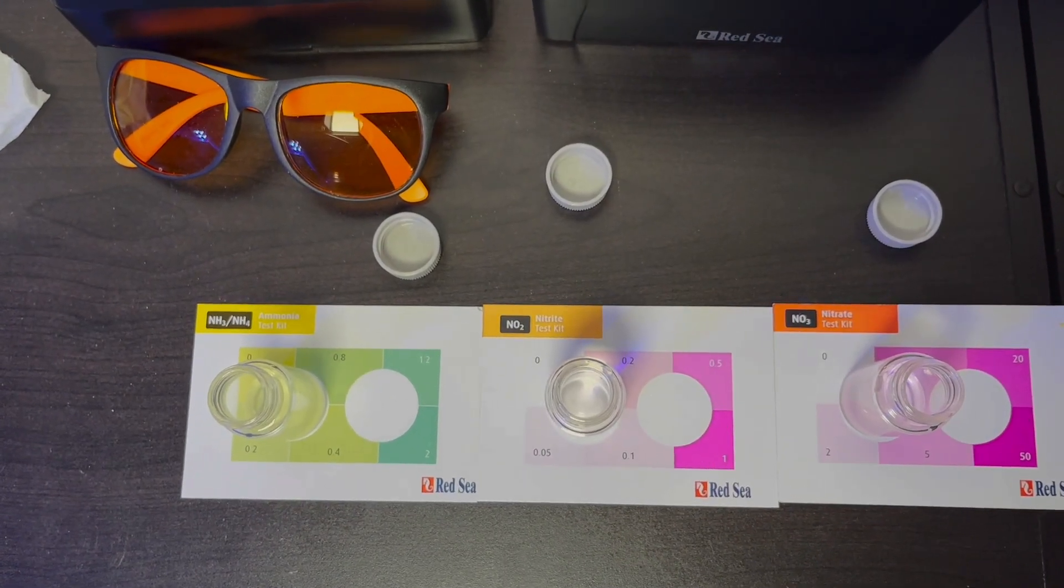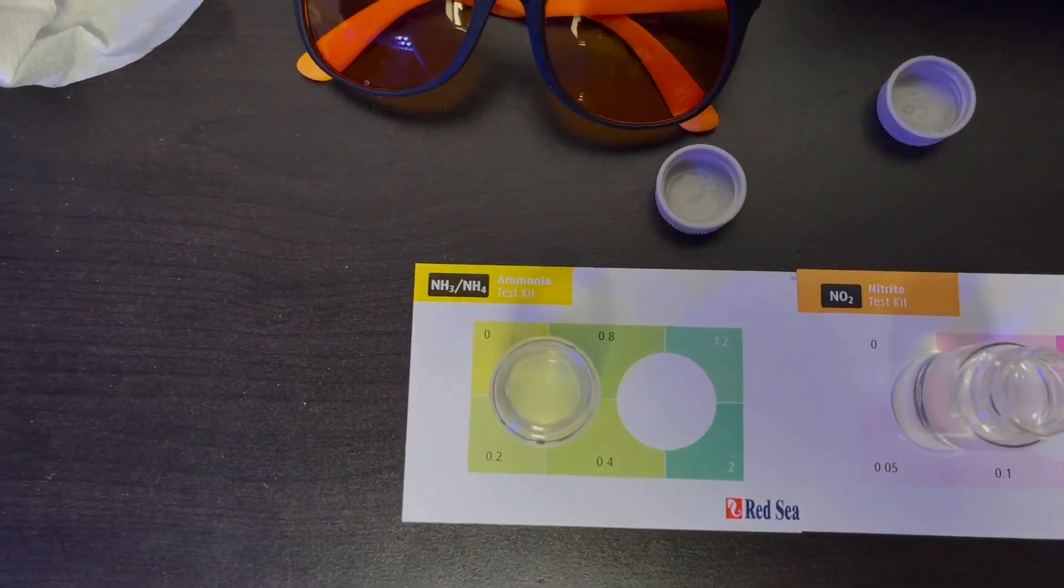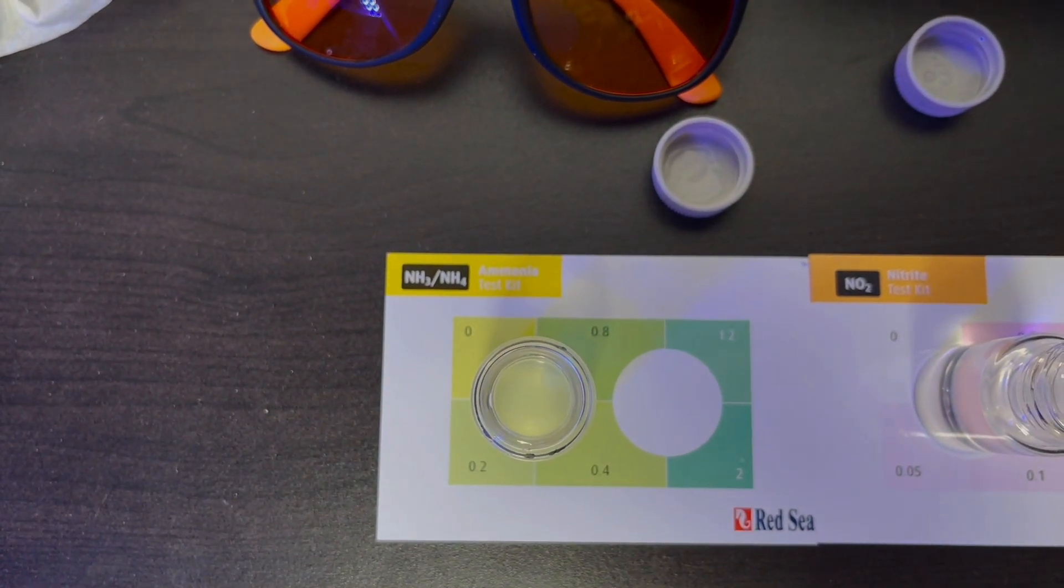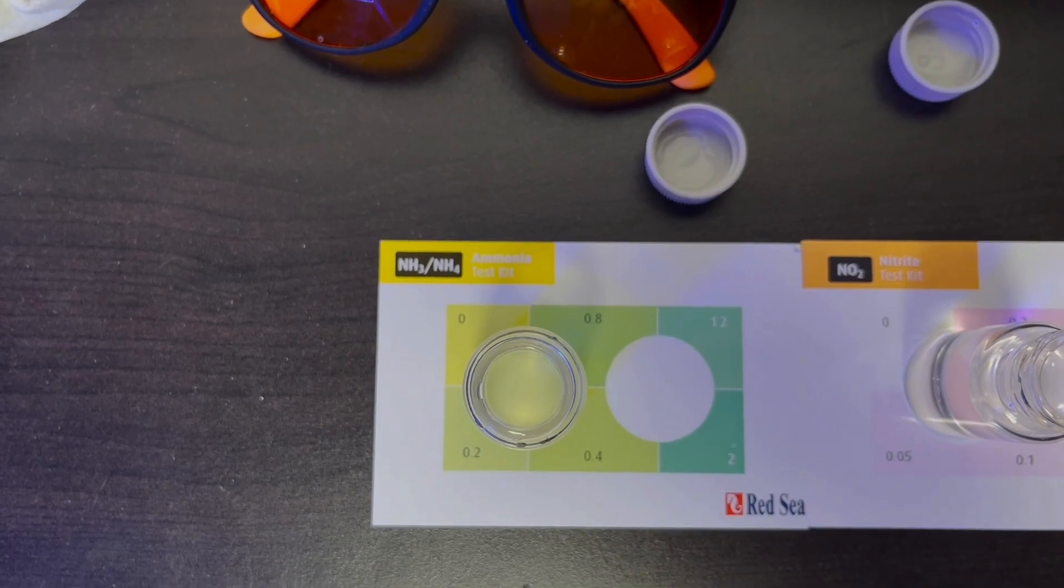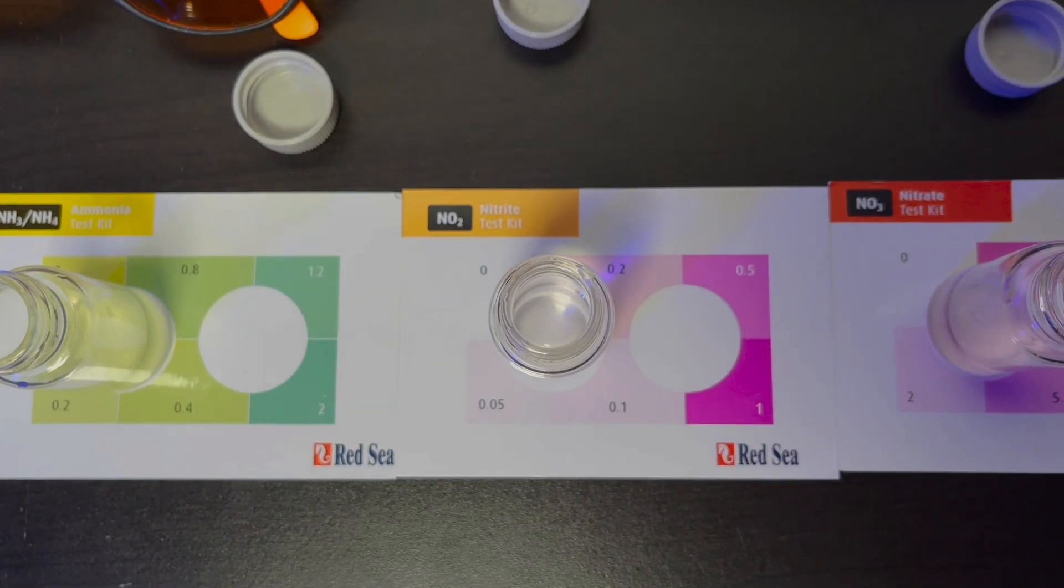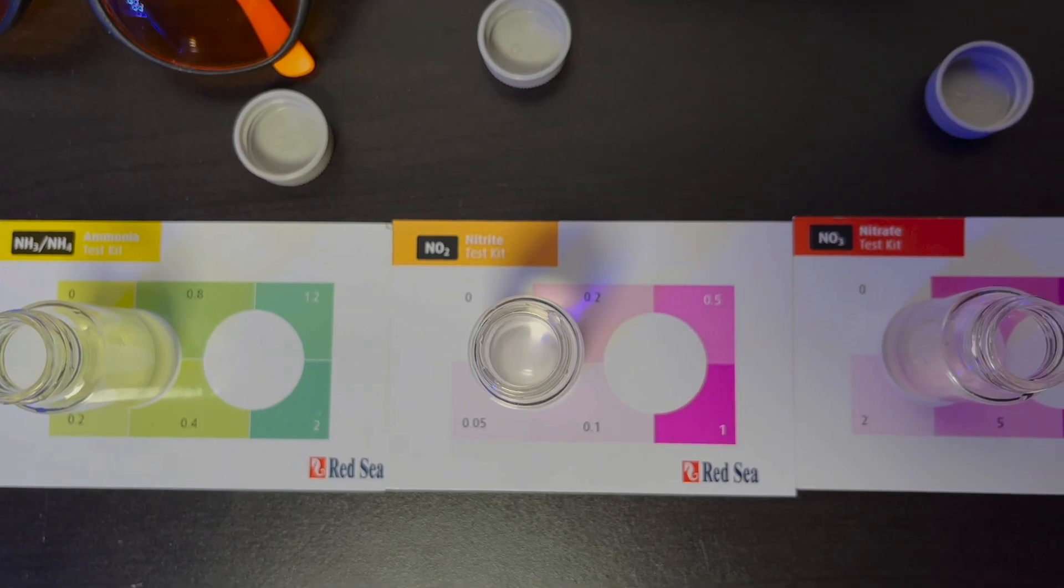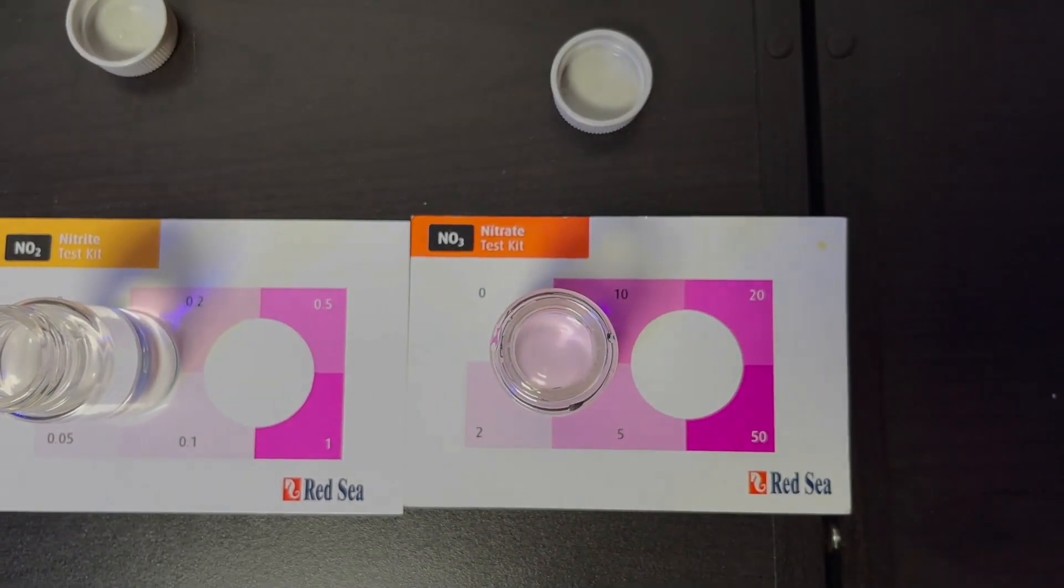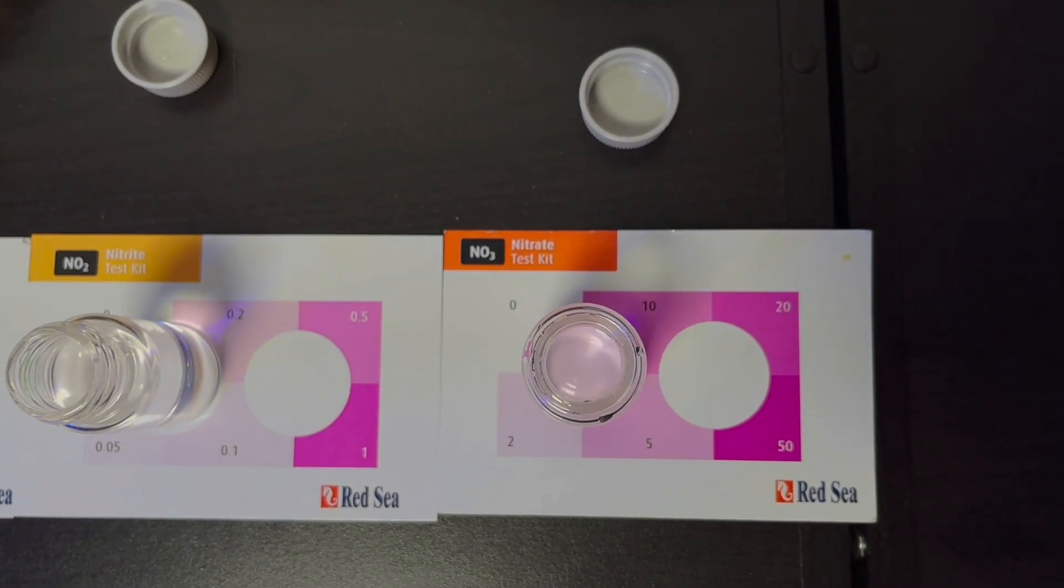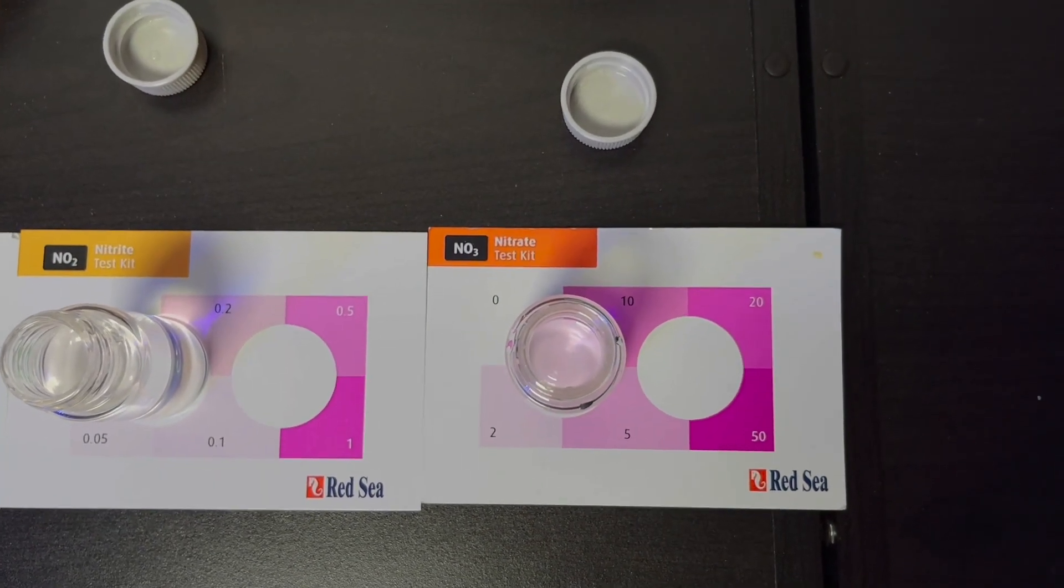All right, guys, now we are fast forwarding to six days later. It is now the 17th of November. That means we are fully cycled now. If you look at these readings, yes, these Red Sea test kits sometimes will keep ammonia on there even if it's zero, but I'm sure there might be a little bit in there. Our nitrite looks clear, meaning it is at zero. It is fully cycled, leaving us with nitrate. You see that pink in there for the nitrate? That means we have a full cycle for our BioCube. Let's go.